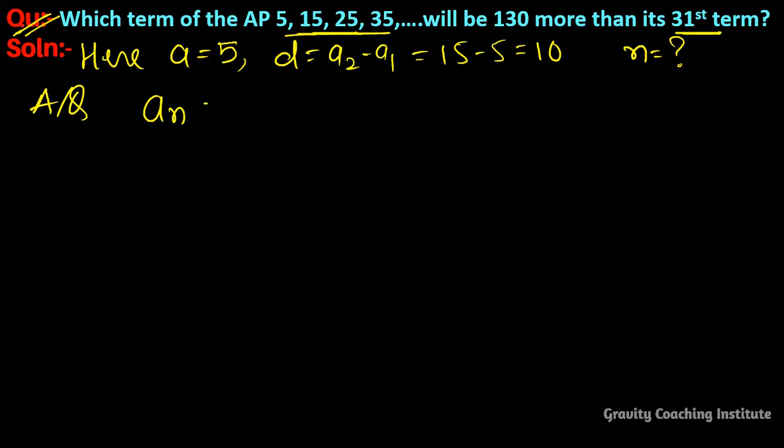So this nth term is equal to 31st term plus 130 more. AP ka nth term formula is a plus (n-1) into d. And now a31 is a plus 30d.